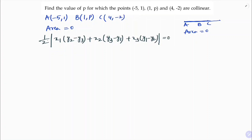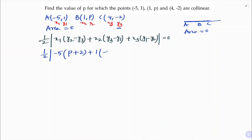This equals zero because the points are collinear. Here x1 = -5, y1 = 1, x2 = 1, y2 = p, x3 = 4, y3 = -2. Substituting the values: half mod of x1 is -5, y2 is p, y3 is -2, so (p minus (-2)) gives (p + 2). Plus x2 is 1, y3 is -2 minus y1 which is 1.